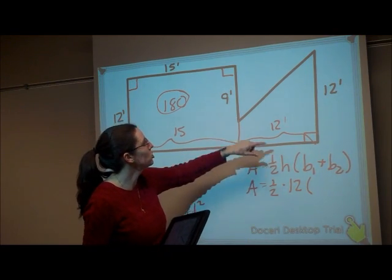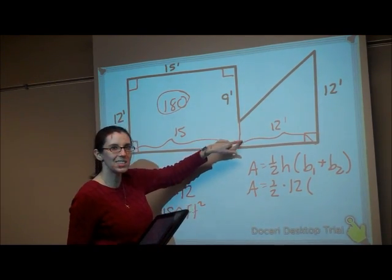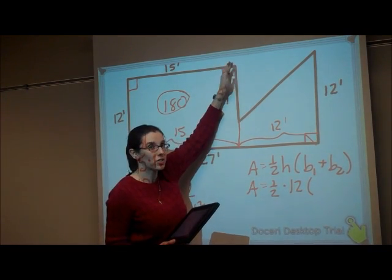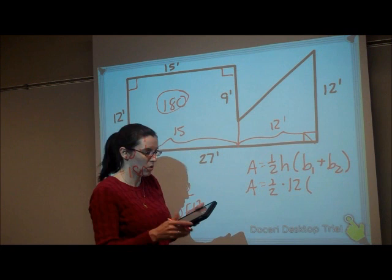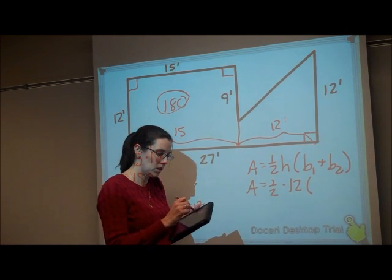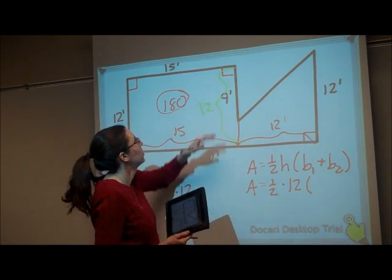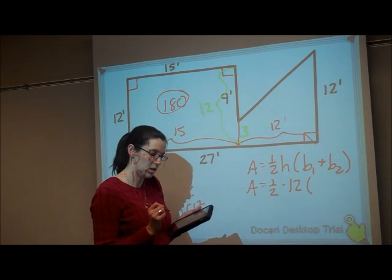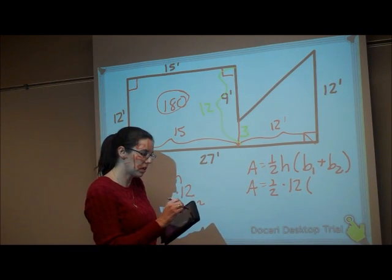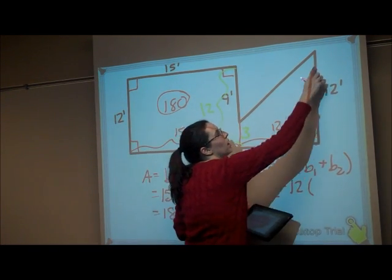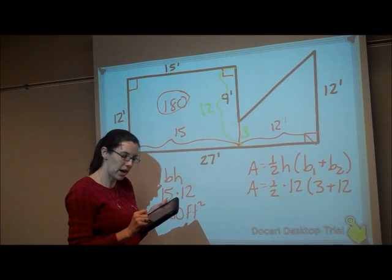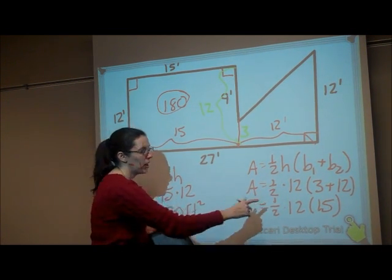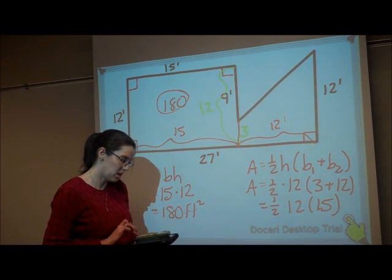And then looking for my bases, the two parallel sides, well, one of them is 12, but this one is 9. This whole thing was 12, which means transferring that over here, all of this would be 12. So all of this is 12. So taking out the 9 leaves this part to be 3. So going back to my trapezoid formula, the bases are going to be this 3 and this 12. So I need to add those together. 1 half times 12 times 15. 1 half times 12 is 6. 6 times 15 is 90. So the area of this trapezoid is 90 square feet.